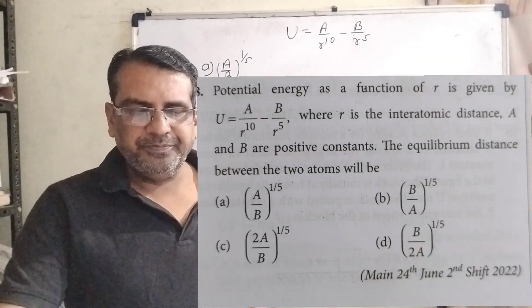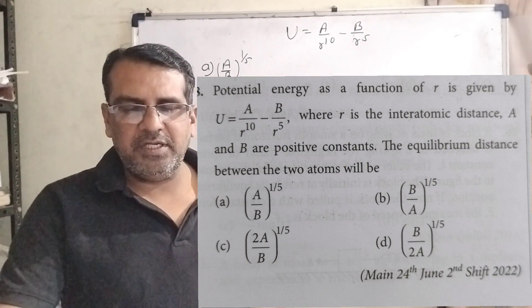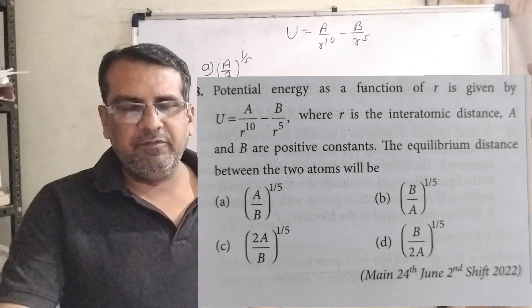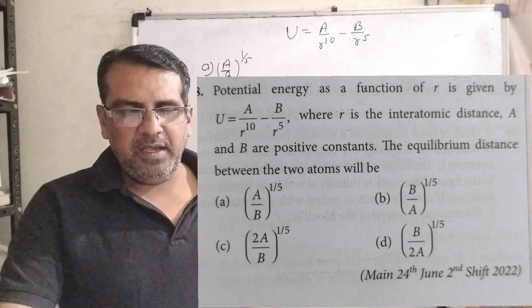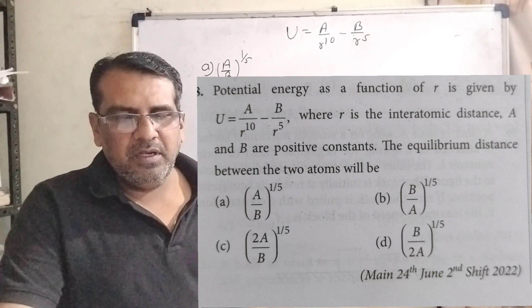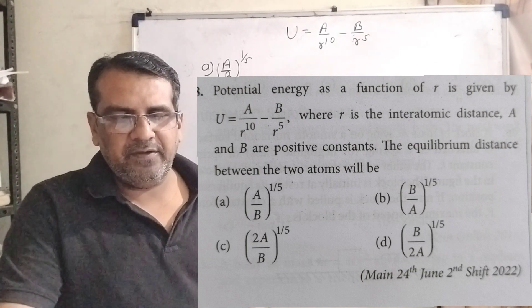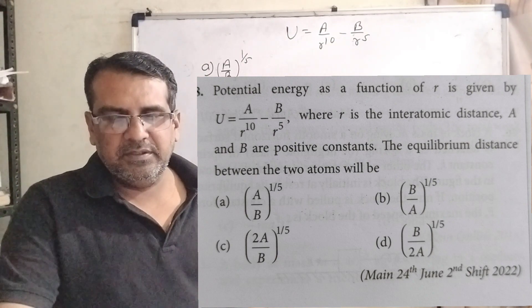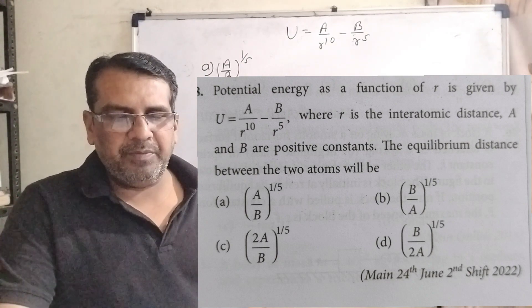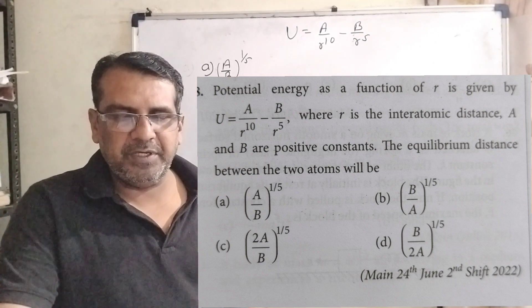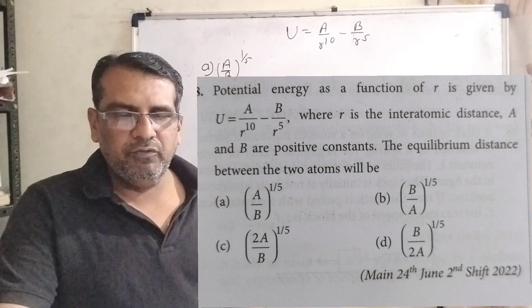Here is the question. Potential energy as a function of r is given by U equals A divided by r raised to power 10 minus B upon r raised to power 5, where small r is the interatomic distance. Capital A and capital B are positive constants. The equilibrium distance between the two atoms will be.